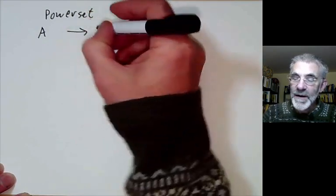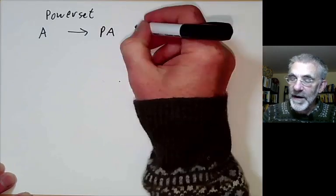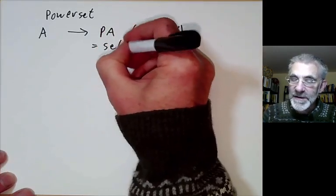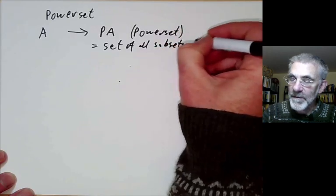So the power set axiom just says that if you've got a set A then we can form a power set of A which is the set of all subsets of the set A.